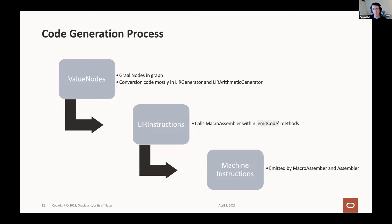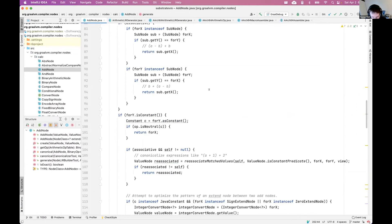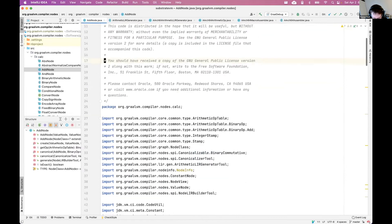How does the backend work? When generating code within a GraalVM backend, the process is to go from a mostly target-agnostic graph of GraalVM value nodes and then translate those into LIR instructions. The translation of GraalVM nodes to LIR instructions is handled mostly in LIR generator and LIR arithmetic generator, or the target-specific implementations of these. Then at a later point, these LIR instructions are converted to machine instructions via the assembler. I'll walk through an example using an add node to see what ARM code gets generated.